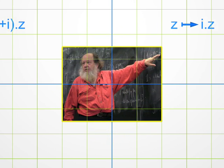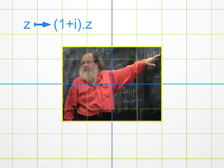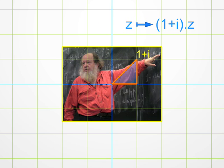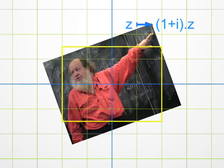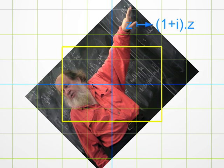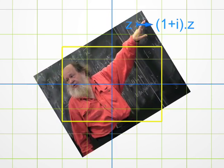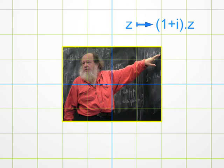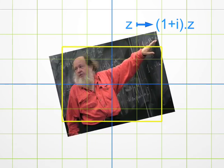A bit more complicated: multiplication by 1 plus i. Look at the complex number 1+i. It corresponds to the point with abscissa 1 and ordinate 1. Its argument is 45 degrees, and its modulus is the square root of 2, using Pythagoras' theorem. Hence, a multiplication by 1+i amounts first to multiplying the modulus by the square root of 2, and then to adding 45 degrees to the argument. In simple words, one has to combine a homothety and a rotation. This is called a similarity.